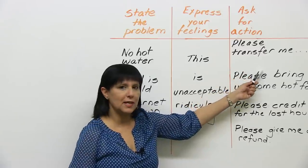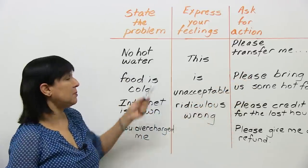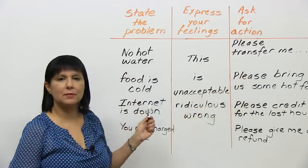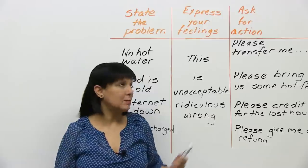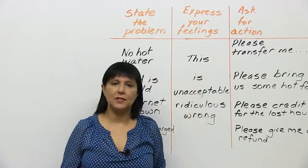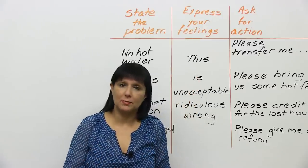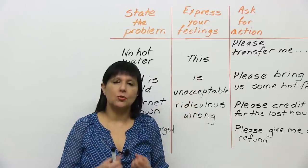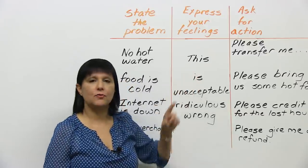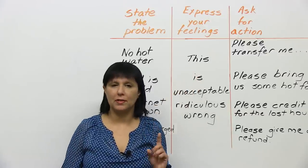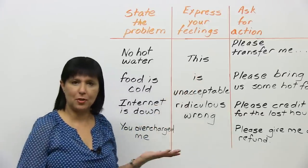It's very important to do this last part. Some people just state the problem or grumble by expressing their feelings, but they don't tell people what they want them to do. So if you really want action, make sure you ask for what you want someone to do to fix your problem.